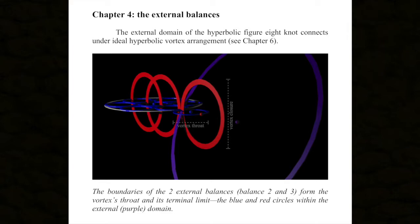Since the two asymmetric chirally-connected parts are different, they can be distinguished. One we label the throat — the smallest one — and the larger one we call the closure. Think of how a torus has two circles in it: there are two limits of the constructively composed total boundary surface. So far I'm showing you the partitions, the pieces that get partitioned, but when you put them in action they trace out surfaces that close and form. The boundaries of the two external balances — balances 2 and 3 — form the vortex's throat and its terminal limit, which are the blue and red circles within the external purple domain.